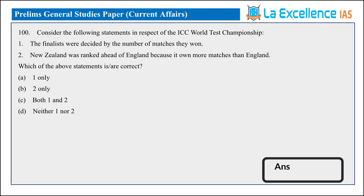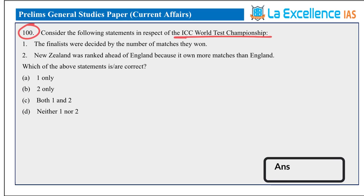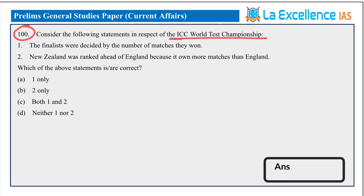The final 100th question is related to ICC World Test Championship. Statement 1: Finalists are decided by the number of matches they won — No, this is incorrect. Statement 2: New Zealand was ranked ahead of England because it won more matches than England — No, this is also incorrect. Both are incorrect, that is why the answer is D, neither one nor two.